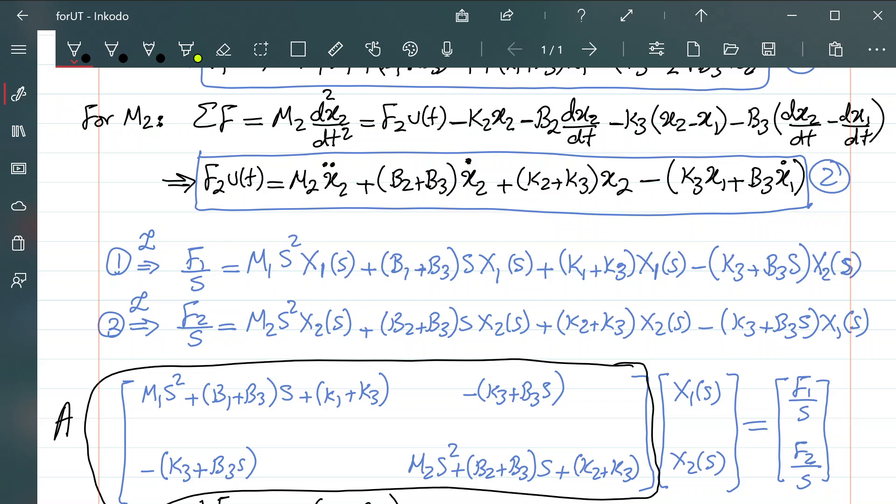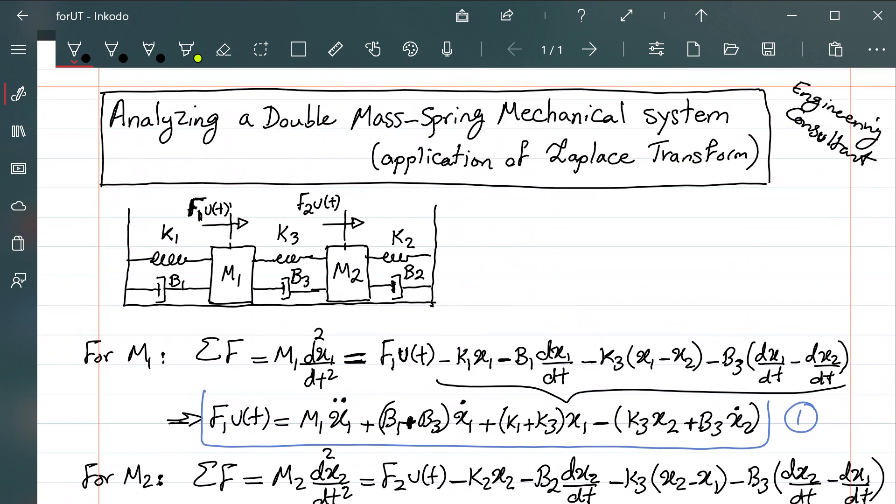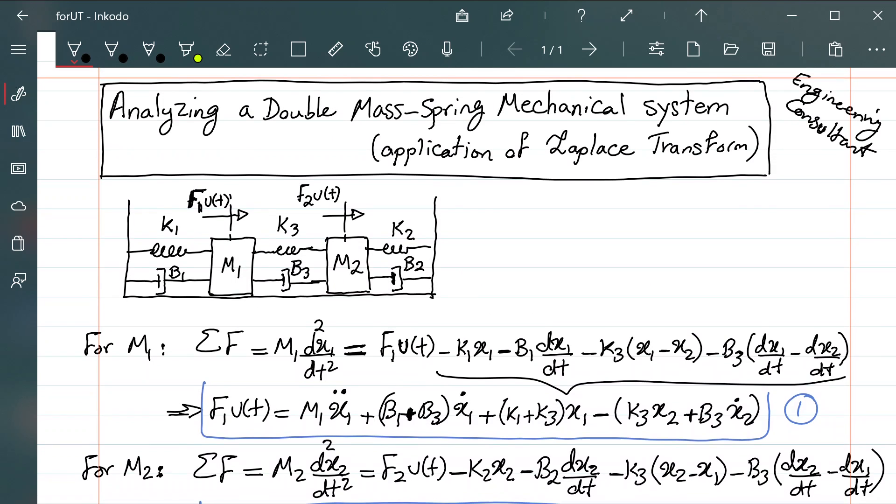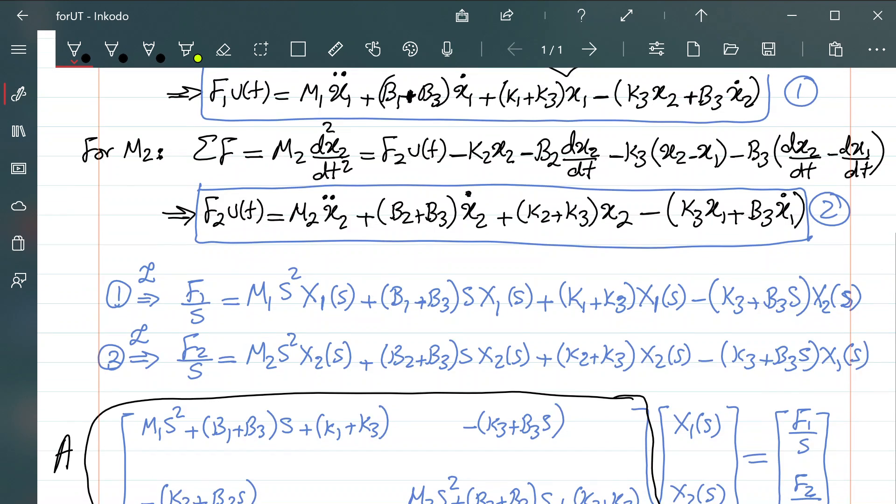And for x2 of s, denominator is the same thing, so it's determinant of A, and numerator, it's going to be - this is again using the Cramer's rule - so we keep the first column as I am showing here, and then you just replace the second column with f1 over s and f2 over s. I hope that you find this brief video tutorial regarding an example of application of Laplace transform to analyze a double mass spring mechanical system useful. Thank you.